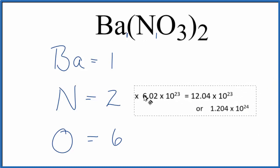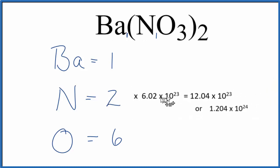2 times Avogadro's number gives you the number of nitrogen atoms in one mole of barium nitrate.